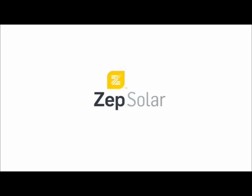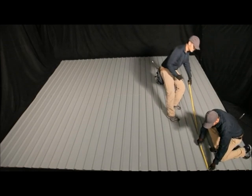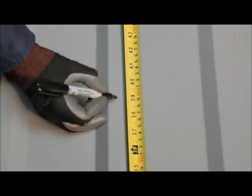This video demonstrates the installation of a Zepsolar ZS trap array on a trapezoidal metal roof. Using your Zepulator layout for reference, mark the locations of the trap mounts.